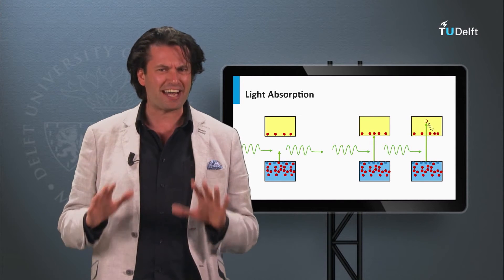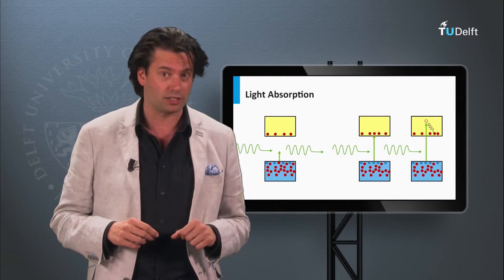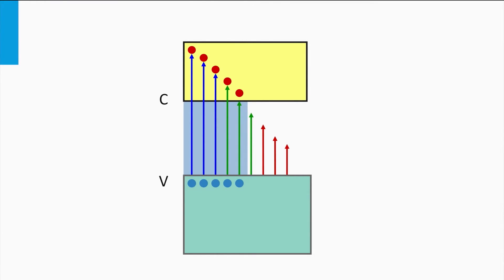Let's see how the bandgap affects the open circuit voltage and short circuit current density. In this illustration, the conduction band, valence band, and bandgap of the absorber material are shown. I represent the solar spectrum by arrows with various lengths and colors. The blue arrows correspond to energetic photons — their photon energy is much higher than the bandgap. The green and red arrows correspond to photons with lower photon energy. The red photons have a low energy, even smaller than the bandgap energy. Note that in this illustration the bandgap is relatively large, so only the blue and partly the green photons are able to excite charge carriers.